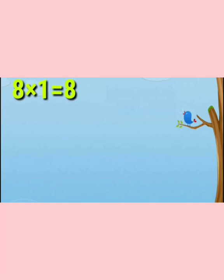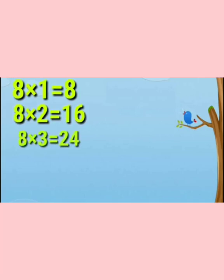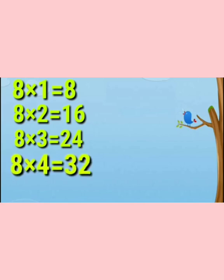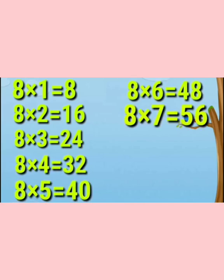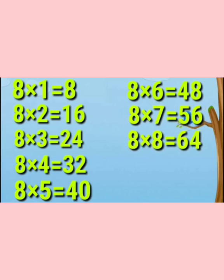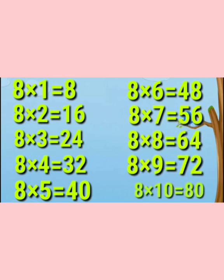Now repeat: 8 ones are 8, 8 twos are 16, 8 threes are 24, 8 fours are 32, 8 fives are 40, 8 sixes are 48, 8 sevens are 56, 8 eights are 64, 8 nines are 72, 8 tens are 80.